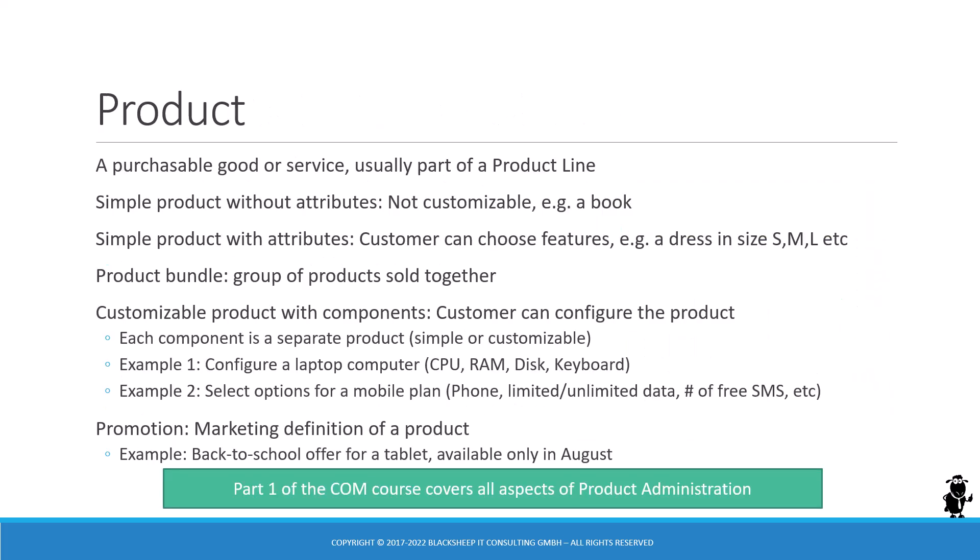In the first part of the Customer Order Management course by the Siebel Hub, we cover product administration. A product is a purchasable good or service, usually part of a product line. We can define product bundles as a group of products always sold together, and Siebel also supports customizable products with components which can themselves be customizable, allowing creation of very complex hierarchies for customer or agent configuration.